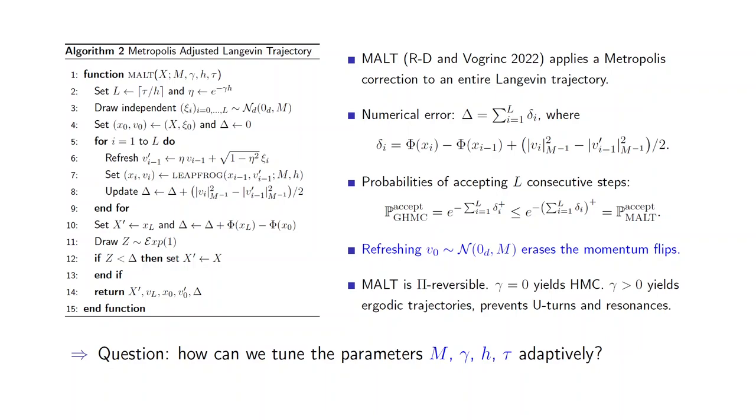When this friction becomes positive, the algorithm yields ergonomic trajectories which prevent both U-turns and resonances. Throughout the talk, we are now going to focus on the question of tuning its parameters.